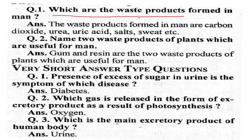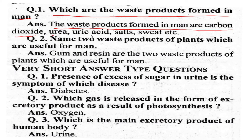Question: Which are the waste products formed in humans? The waste products formed in humans are carbon dioxide, urea, uric acid, salts, and sweat.